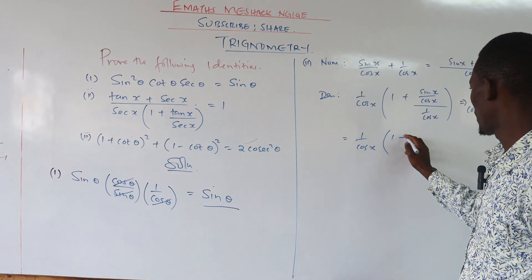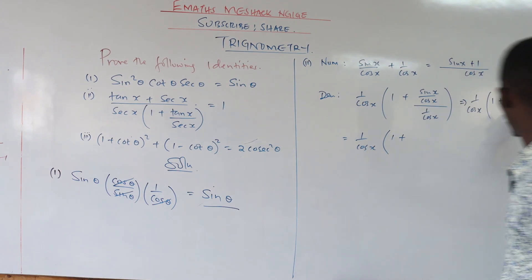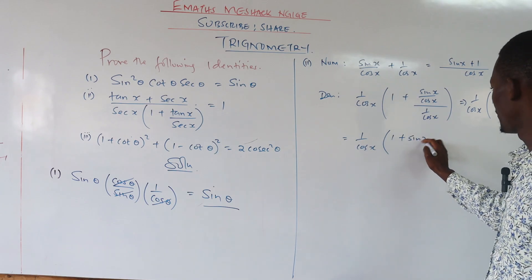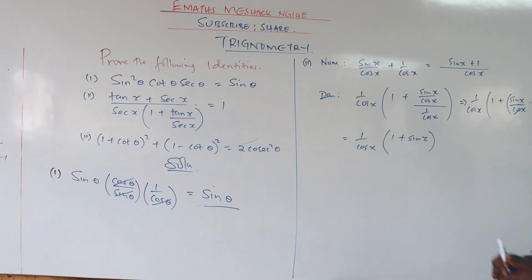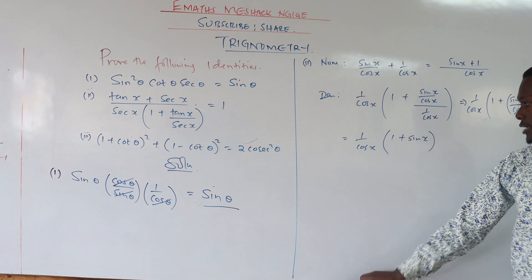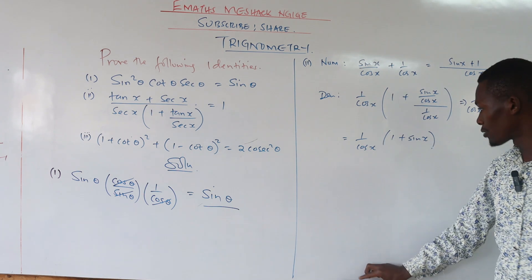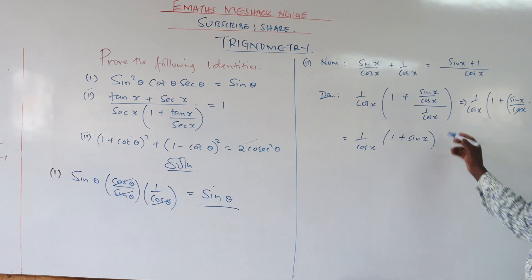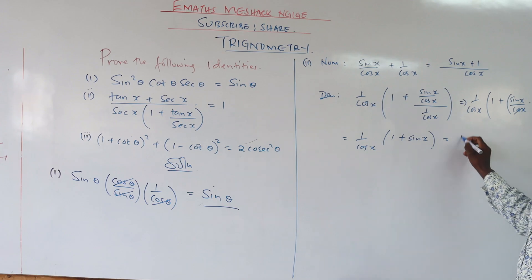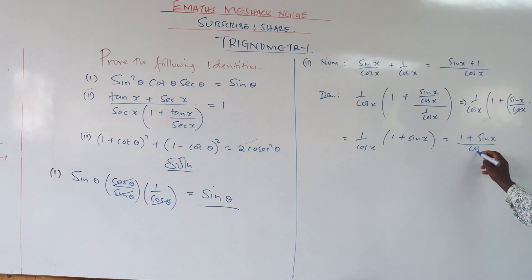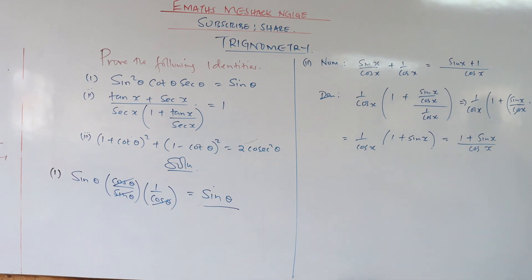Expanding the value outside the bracket: we shall have one plus sine of x all over cosine of x as the denominator.